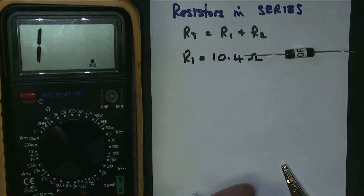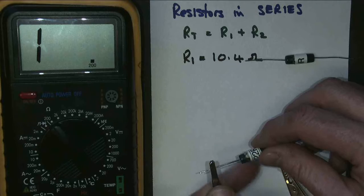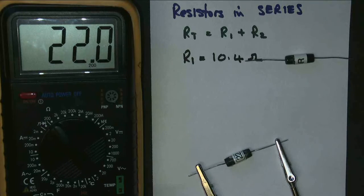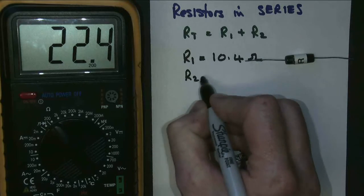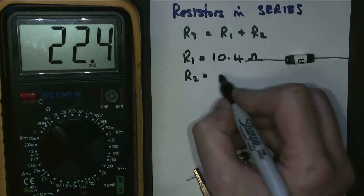Ta-da! Here's my second resistor. It's not the same value. It's 22 ohms nominally. Let's have a look. So R2 is going to be 22.4 ohms.